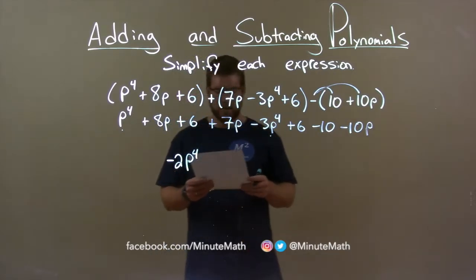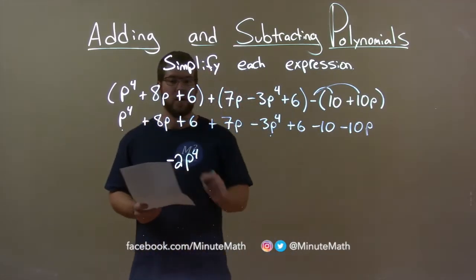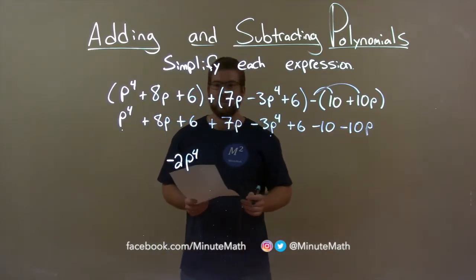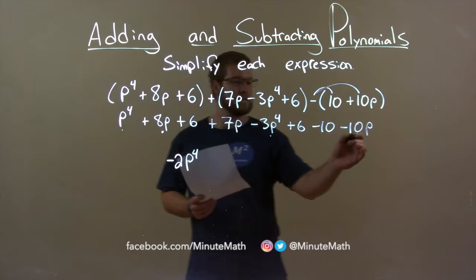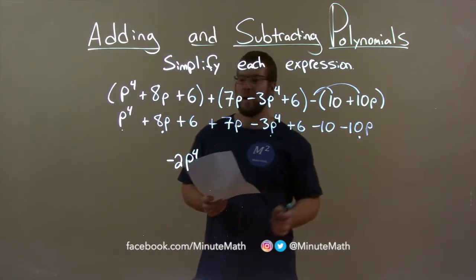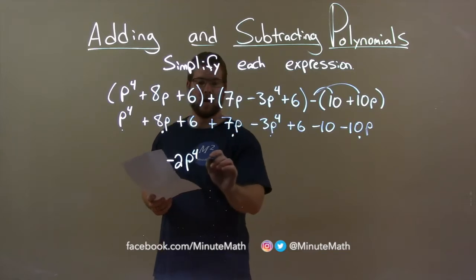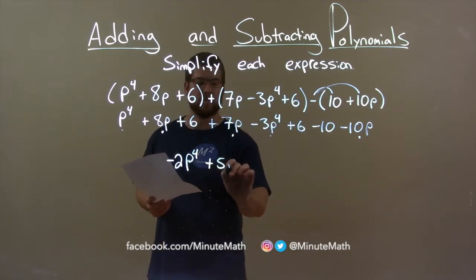Now the next highest degree I see is just the p's. We have 8p, 7p, and minus 10p. Well, 8p and minus 10p is minus 2p. Minus 2p plus 7p is positive 5p.